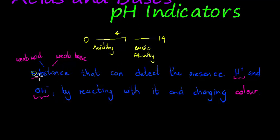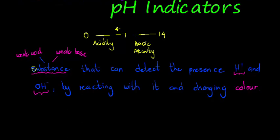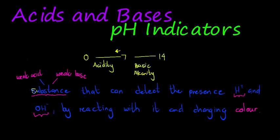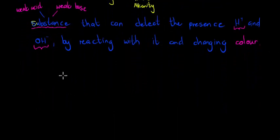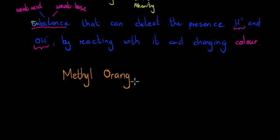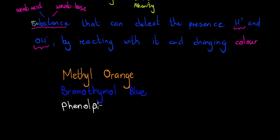There are literally hundreds of these substances, but we're only going to look at three. This is unfortunately one of those things you have to remember. We are going to work with methyl orange, bromothymol blue, and phenolphthalein.